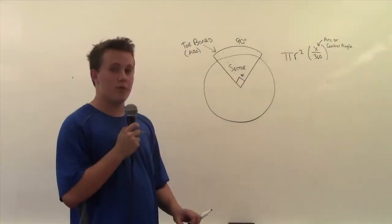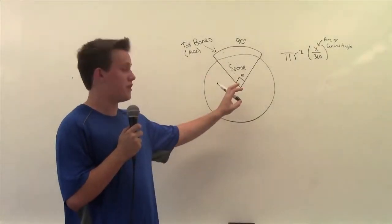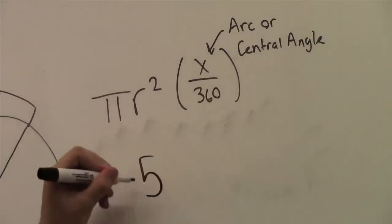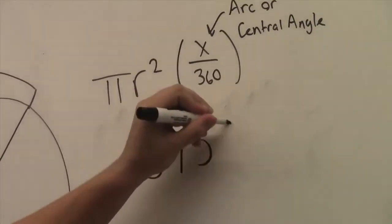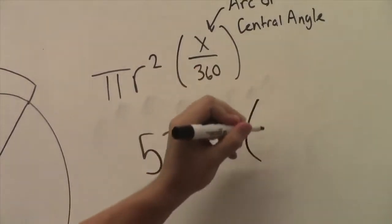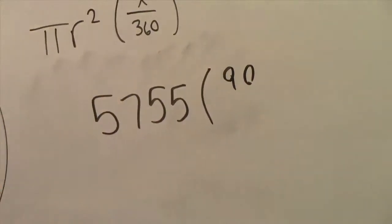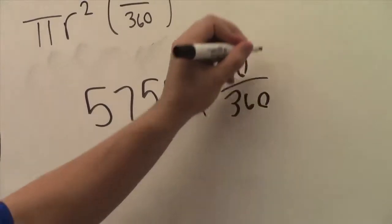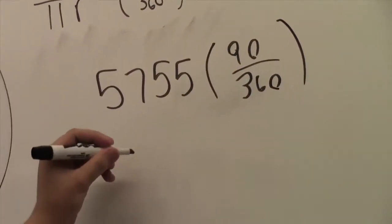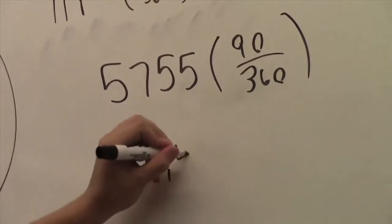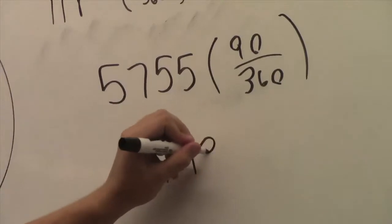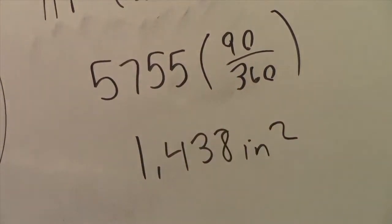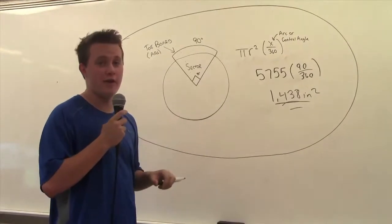I drew a model on the board to better understand what the sector looks like. In this case, our area would be 5,755, and you multiply that by 90 — which is the angle of this arc — over 360, to finally get the answer of 1,438 inches squared. This is how you find the area of a sector.